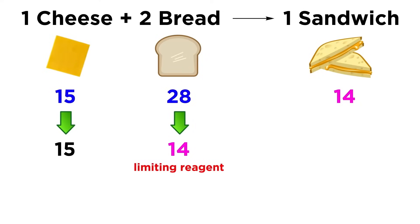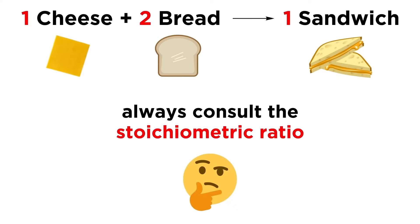So even though there are more slices of bread than slices of cheese, the bread would run out first, leaving one slice of cheese left over. This should teach us that we must always consult the stoichiometric ratio of a reaction in order to figure out which substance is the limiting reagent.